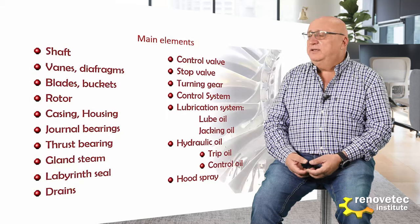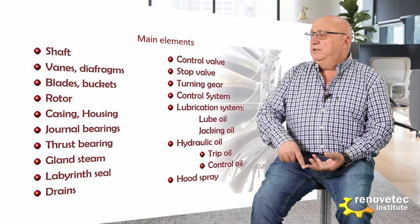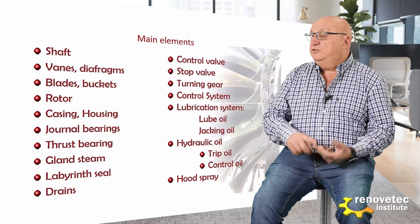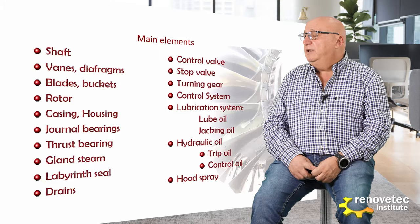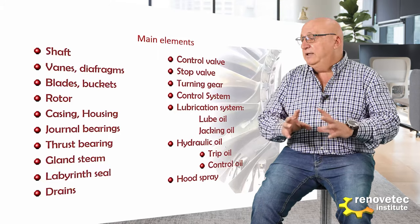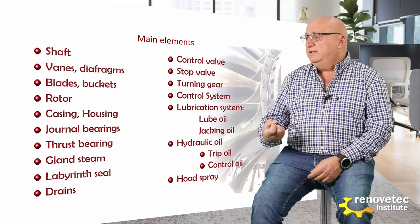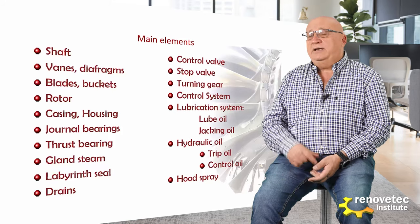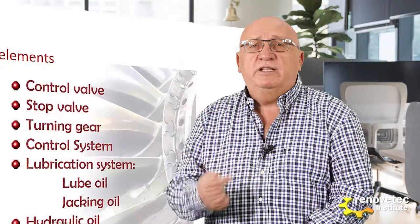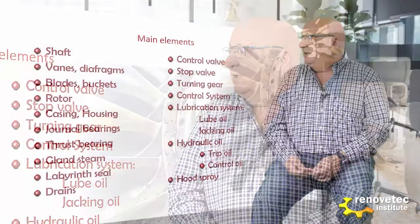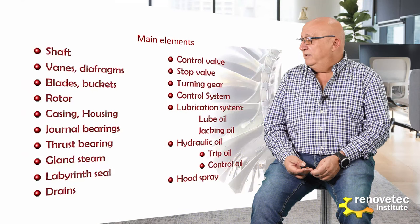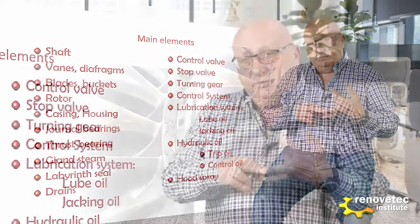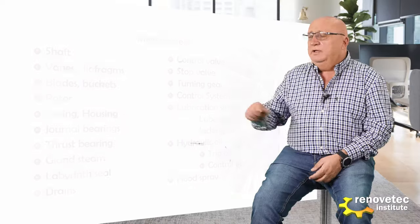The main elements of a turbine are: the shaft, the vanes and blades, the rotor, the casing, the bearings (journal bearing and thrust bearing), systems like the gland sealing and labyrinth seal, the drains, the valves at the inlet (control valve and stop valve), the turning gear mechanism to keep the turbine rotating when it is hot, the control system, and other auxiliary systems like the lubricating system, hydraulic oil, and hood spray.